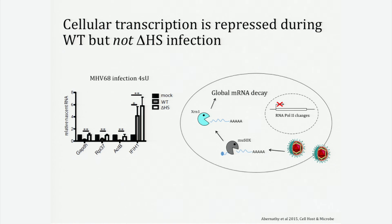Based on the data from the yeast groups, you might expect that when you increase mRNA decay, you would increase mRNA transcription. But that's not at all what we saw — it was the exact opposite. In a wild-type MHV68 infection, we see a significant decrease in the levels of nascent mRNAs at a number of housekeeping genes, compared to a delta HS virus, where you don't see this decrease. As a control, we looked at an interferon-stimulated gene known to be increased in either wild-type or delta HS infection, and we see that it does go up in both cases. This really suggests that in response to global mRNA decay, we're seeing transcriptional repression.